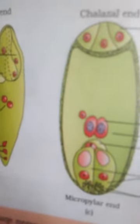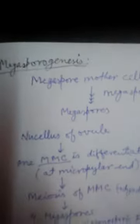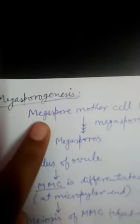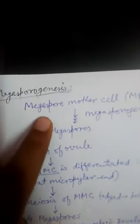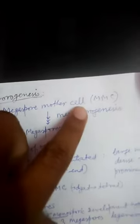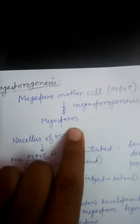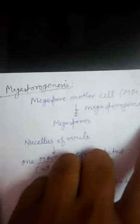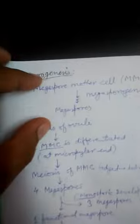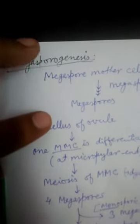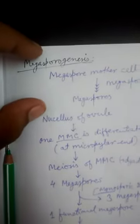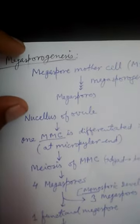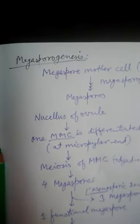Megasporogenesis is nothing but the formation of the megaspores from the megaspore mother cell. The process of formation of megaspores from the megaspore mother cell is called megasporogenesis. You can write down this flowchart and use it to write in your own words the definition of megasporogenesis.